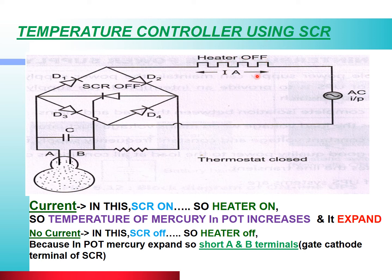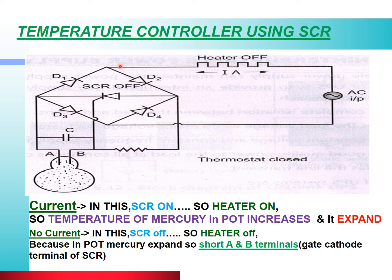When the heater is on, mercury inside the tube expands. As the mercury level rises, both terminals A and B submerge in mercury and become shorted. Due to this shorting, the SCR turns off. Because the SCR is off, the heater circuit cannot complete and the heater automatically turns off.